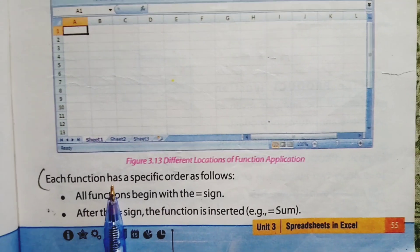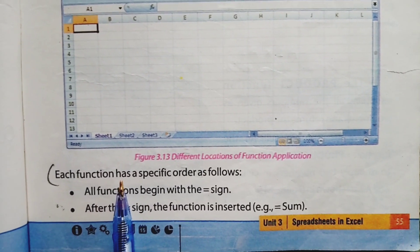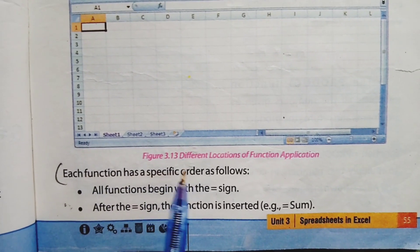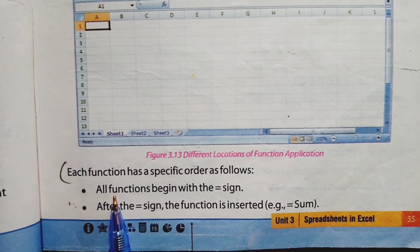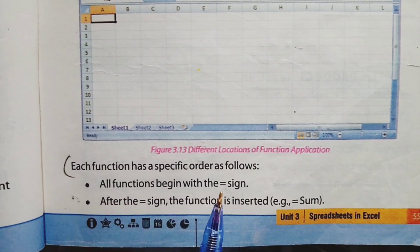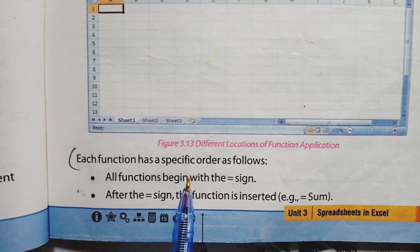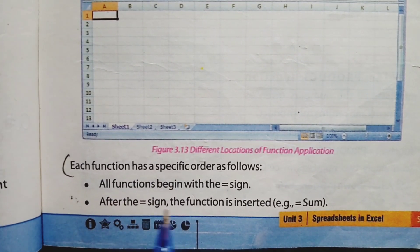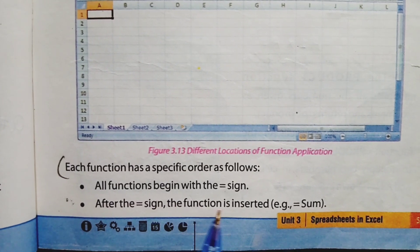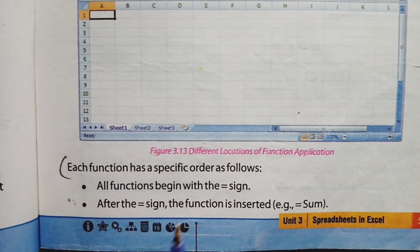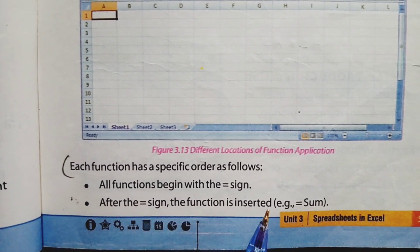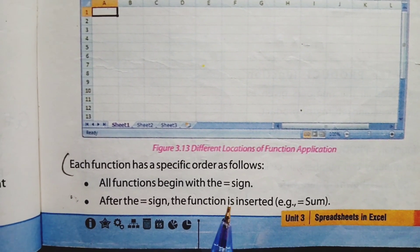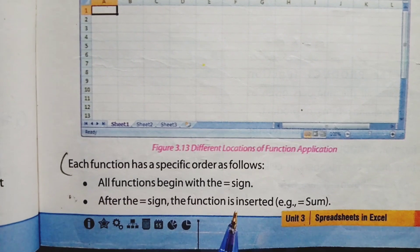The answer of question number 7 is on page number 55. Different parts of a function: each function has a specific order as follows. All functions begin with the equal sign — functions start with an equal sign. We just discussed formulas, which also start with an equal sign. After the equal sign, the function is inserted. This function can be a SUM function, AVERAGE, PRODUCT, MIN, MAX, or SQUARE ROOT function.